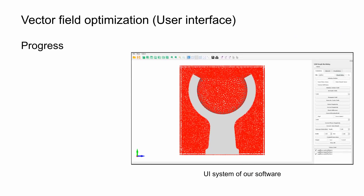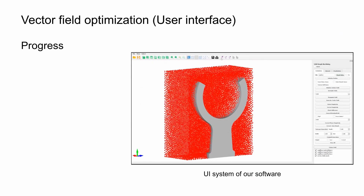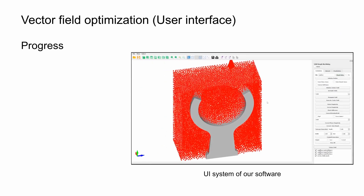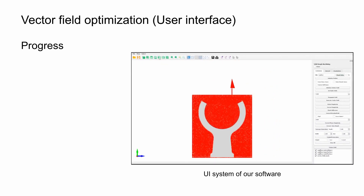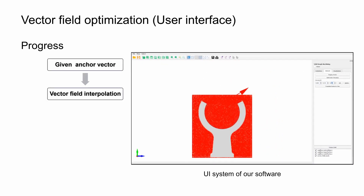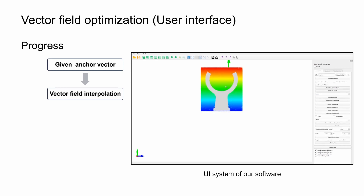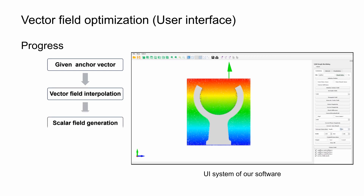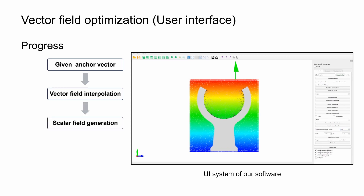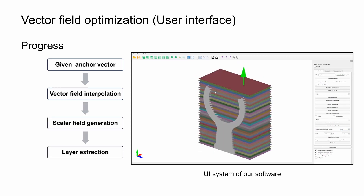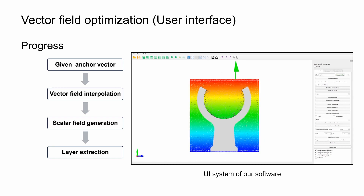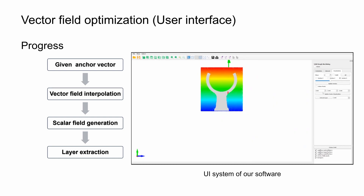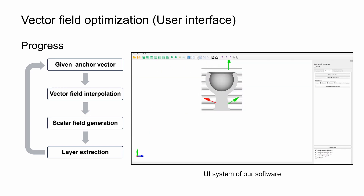In this example, we show our interface as well as the pipeline. The user selects a point in the domain and introduces a direction, which is then interpolated to generate the vector field and then a scalar field, represented by the color of the points. This is then used to generate the layers, whose shape is then modified by introducing a few more anchor directions. Notice that the anchor directions point towards the normal of the surface at those points.